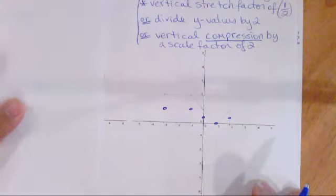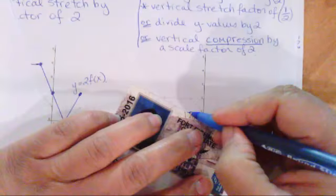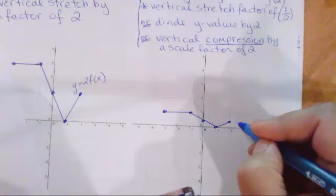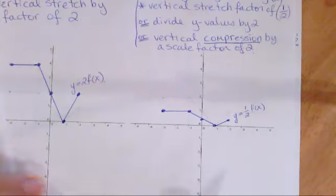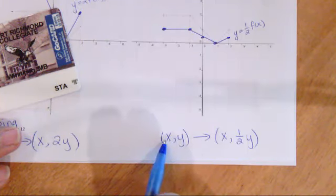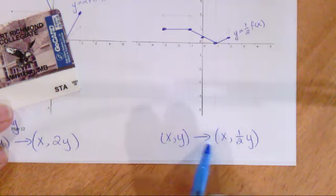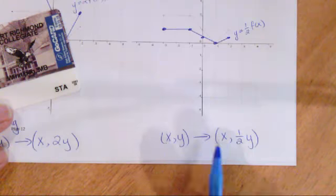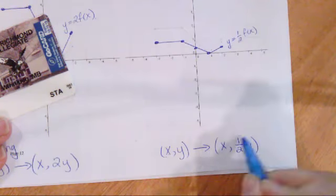Now take your straight edge and redraw the graph — this is now y equals one half f of x. The mapping notation for this has no change to the x values, because there's no change applied to x. Remember it's only applied to the whole f of x, so we're multiplying all the y values by a half.